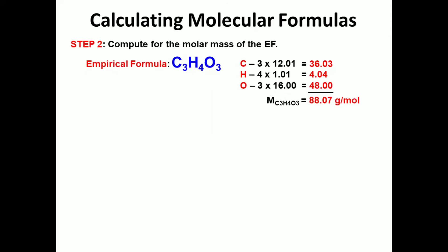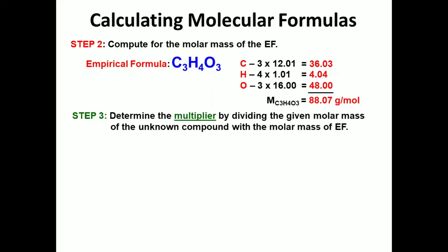Since we already calculated for the molar mass, we can proceed now to step number three. We have to determine the multiplier by dividing the given molar mass of the unknown compound with the molar mass of the empirical formula, which we have computed.